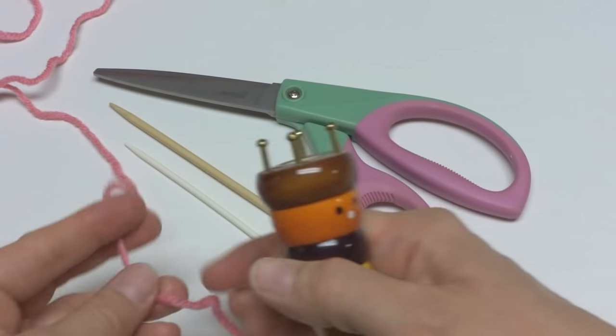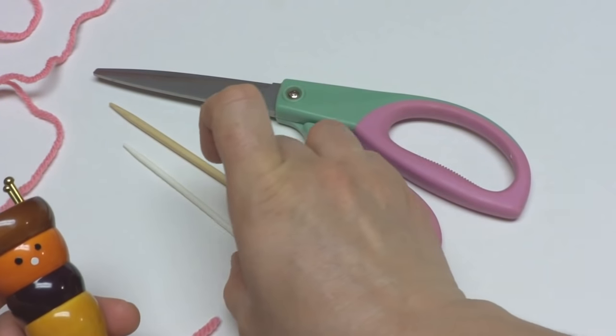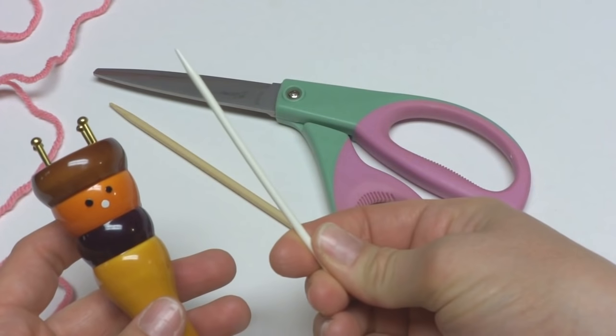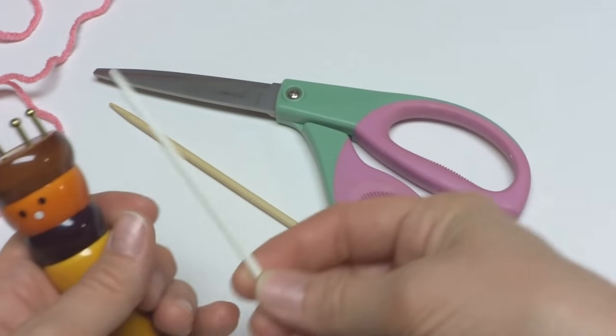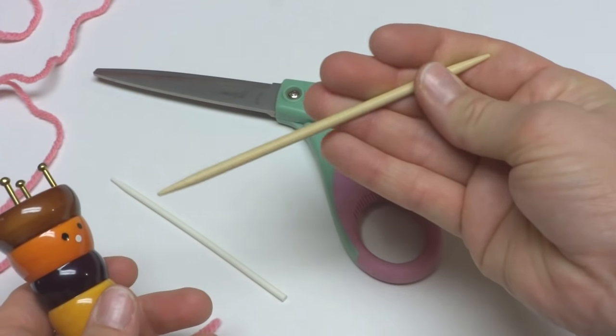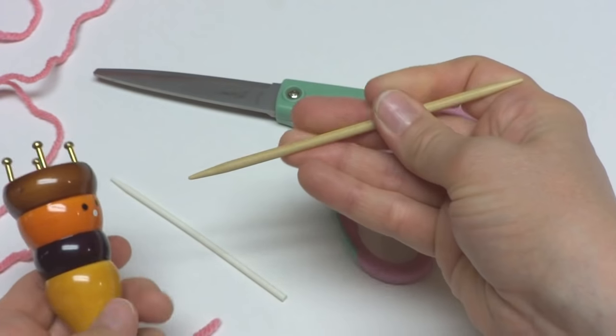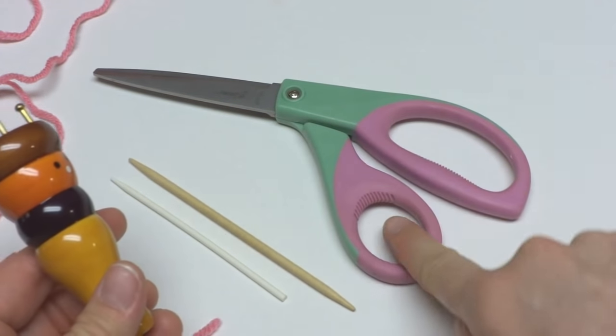So we're going to get started. To use a French Knitter, you're going to need your French Knitter. A lot of times they come with a little stick you can use. Mine came with a plastic stick. I like to use a double pointed needle. This is a US 6 bamboo double pointed knitting needle. And you'll also need a pair of scissors.